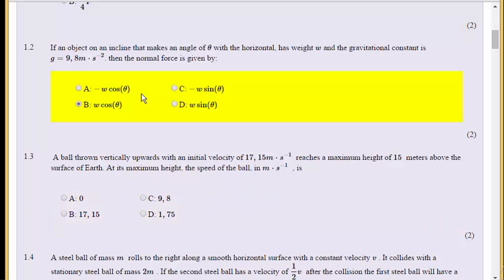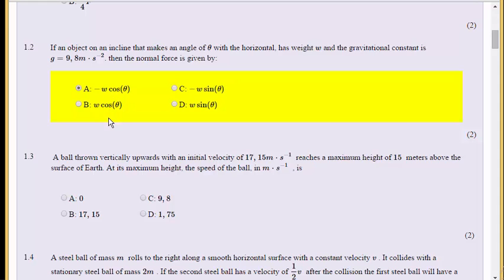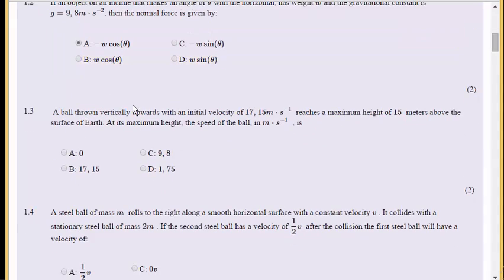Actually, let me correct myself. The gravitational constant was given as positive, meaning downwards is positive. Since the normal force in this case would be upwards, it should be negative — so the answer is negative w·cos(theta).